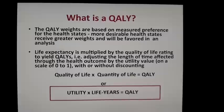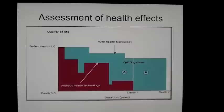Life expectancy is multiplied by the quality of life rating, and these ratings come from either populations with that disease or from databases where we've already collected that data with standard techniques. So to make it easy, a QALY is utility times life years.